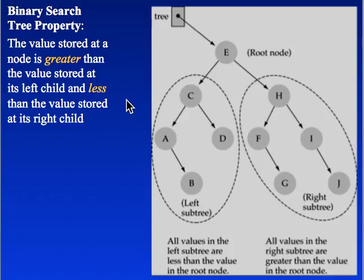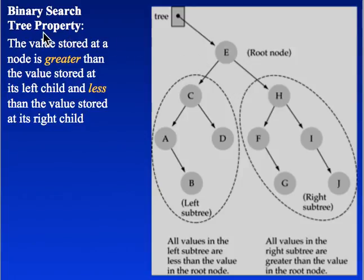Hello, in this video I will talk on the binary search trees. In the binary search trees, we have a root and each node in the binary search tree has up to two children. Binary search tree is also a binary tree. Binary tree means each node has up to two children, so they may have zero or one or two children. But there is a special case for the binary search tree.